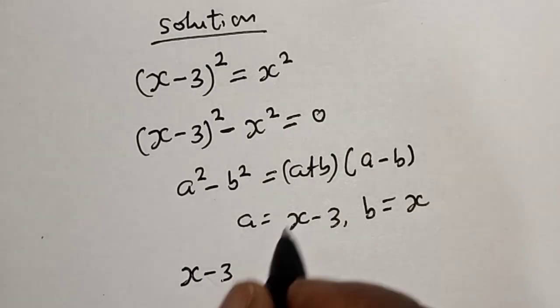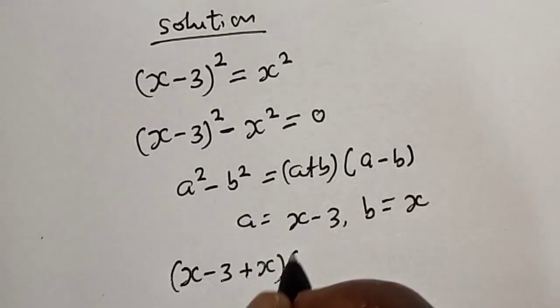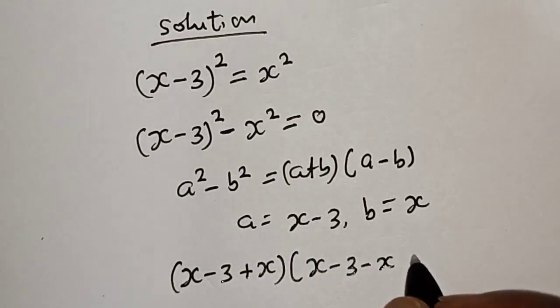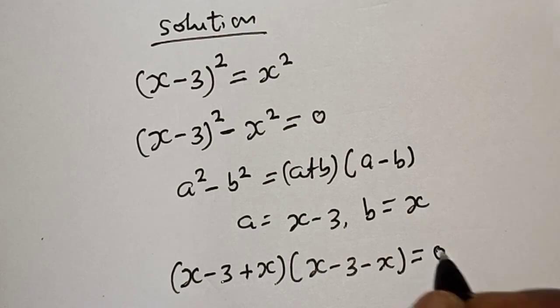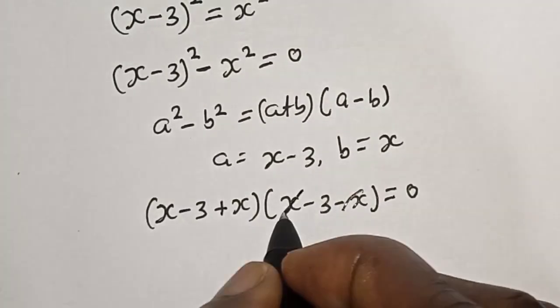This is x minus 3 plus x multiplied by x minus 3 minus x is equal to zero. So this will cancel this.